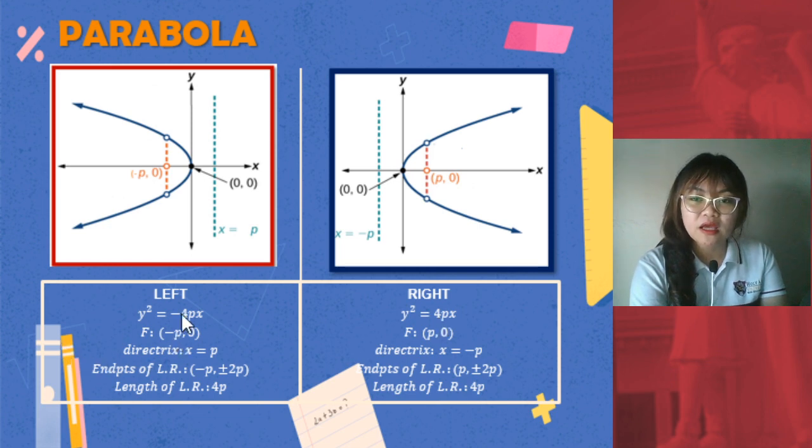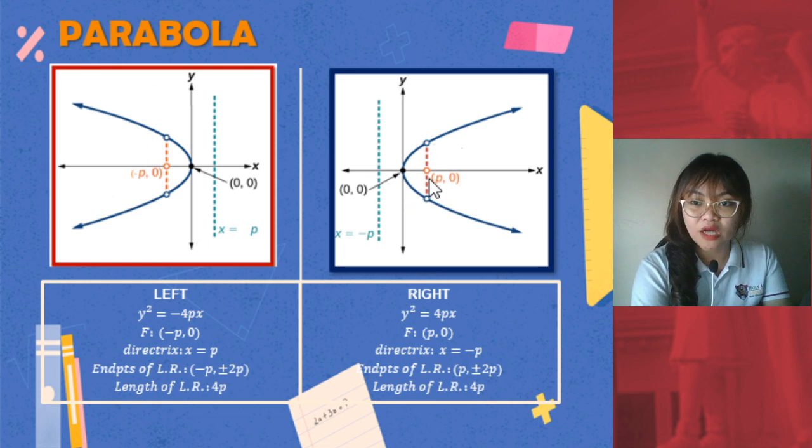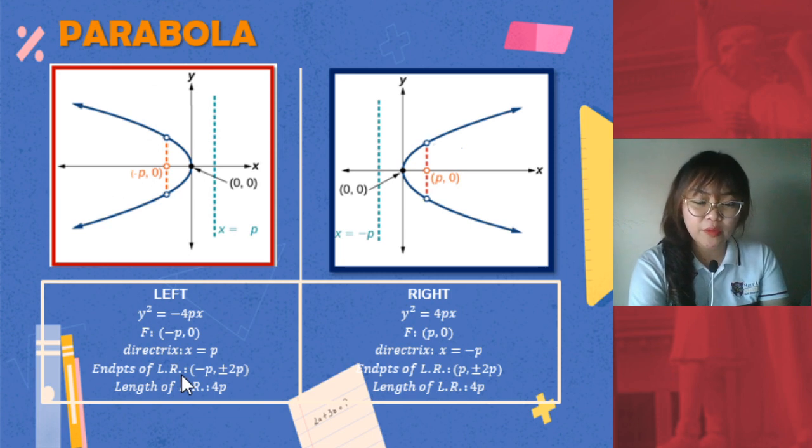For the focus, a parabola opening to the left has a negative focus because it's found on the negative side of your x-axis. While opposite to that is this, found on the positive side of the x-axis. Thus, your focus is positive. For the directrix, you just get the opposite sign of your focus. Now for the endpoints of the latus rectum, same with the first two cases of opening up and down, we just follow these set of formulas.